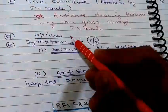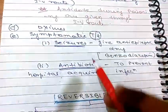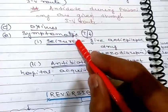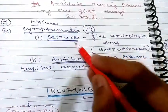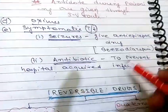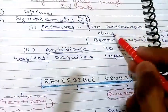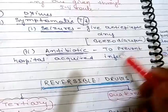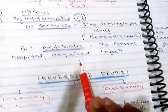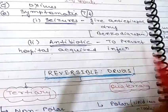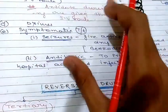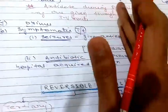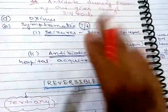We also use oximes as discussed. For symptomatic treatment, if there is a seizure give antiepileptic drugs such as benzodiazepines. Also give antibiotics to prevent hospital-acquired infection. This is the basic management of poisoning. This covers irreversible drugs — organophosphates and carbamates.